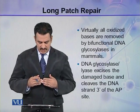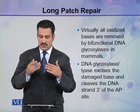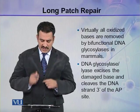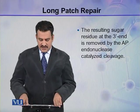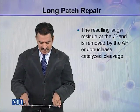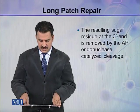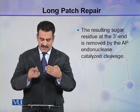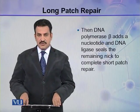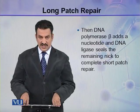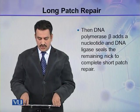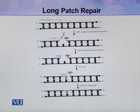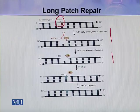DNA glycosylase-lyase excises the damaged base and cleaves the DNA strand 3' of the AP site. The resulting sugar residue at the 3' end is removed by AP endonuclease-catalyzed cleavage. Then DNA polymerase beta adds a nucleotide and DNA ligase seals the remaining nick to complete short patch repair. Here again the same pathway is shown: a damaged base is completely repaired with a new nucleotide.